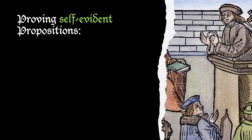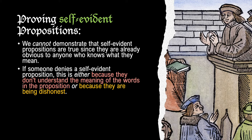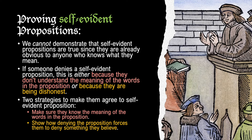How do we prove a self-evident proposition? Strictly speaking, we cannot prove a self-evident proposition because it is obvious or self-evident — we cannot demonstrate that self-evident propositions are true. But sometimes people deny self-evident propositions, either because they don't understand the meaning of the words in the proposition or because they are being dishonest. The first strategy is to make sure that your interlocutor understands the meaning of the words in the proposition — go through it, make sure they understand what the words mean, maybe use a dictionary. The second strategy is to show how denying the proposition forces the interlocutor to deny something they won't actually want to deny.